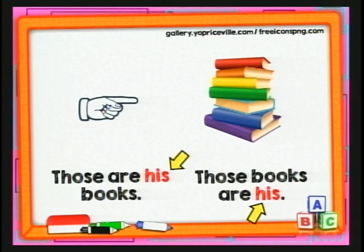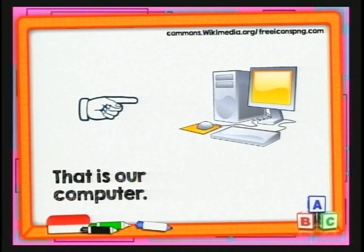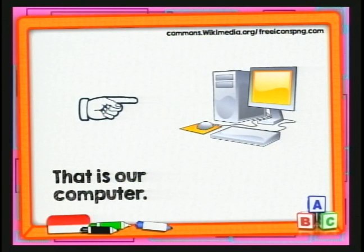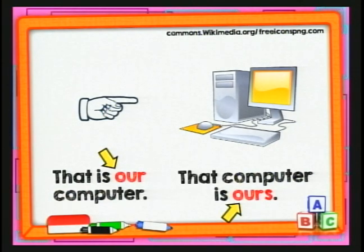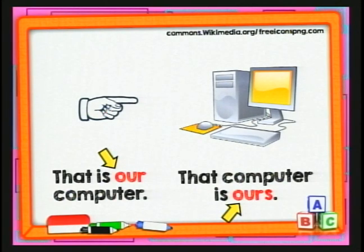Siguiente ejemplo: 'That is our computer' — esa es nuestra computadora. Con pronombre: 'That computer is ours.' El adjetivo 'our' va antes de 'computer', mientras que el pronombre 'ours' lleva una S al final y va solo. 'That computer is ours' significa 'esa computadora es nuestra'. Muy diferente el adjetivo del pronombre.